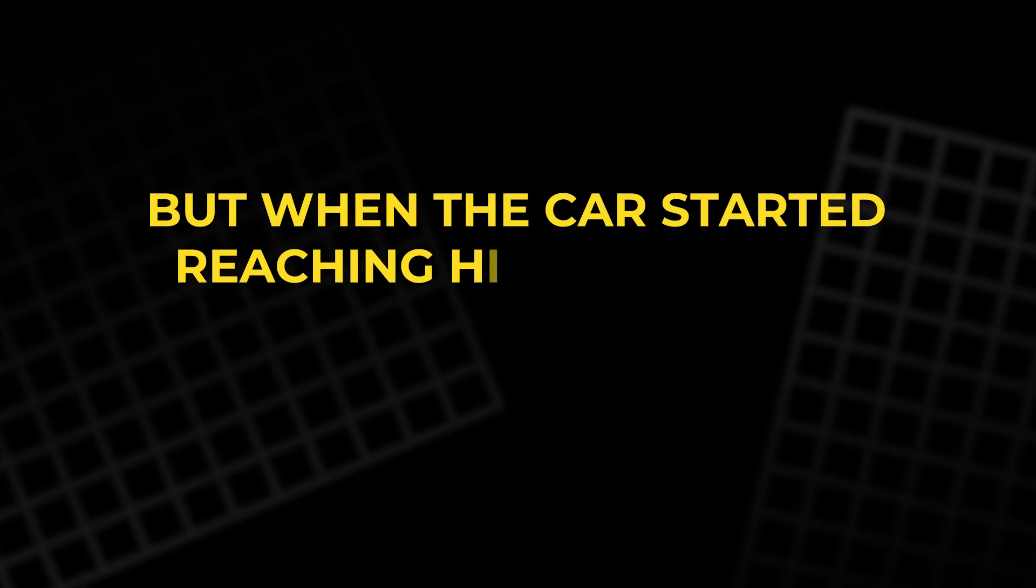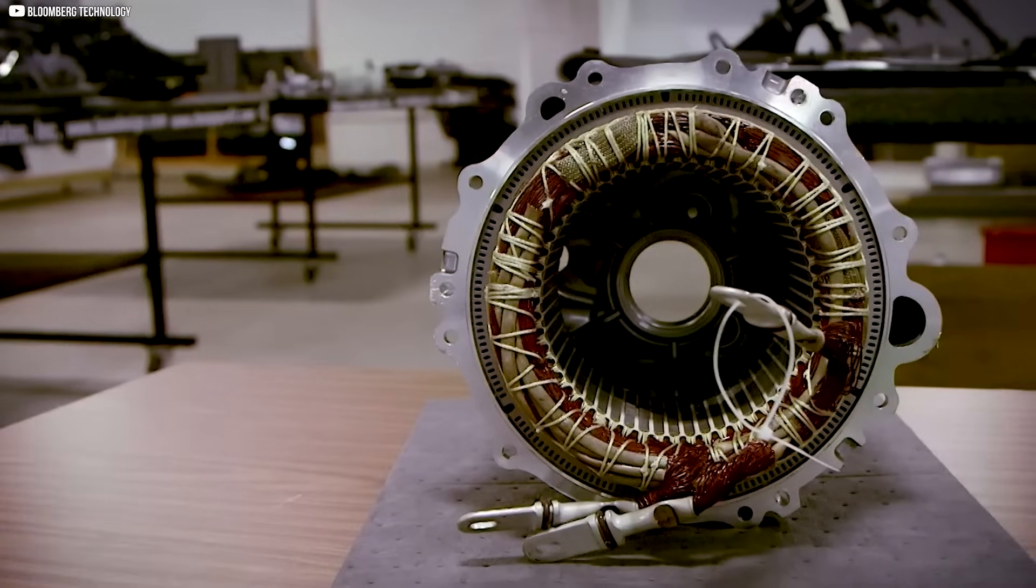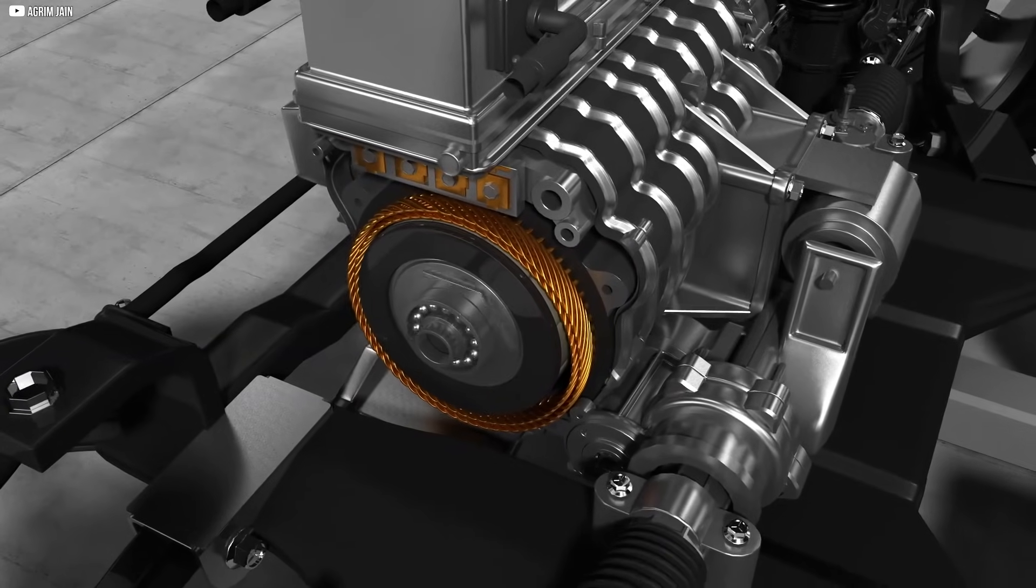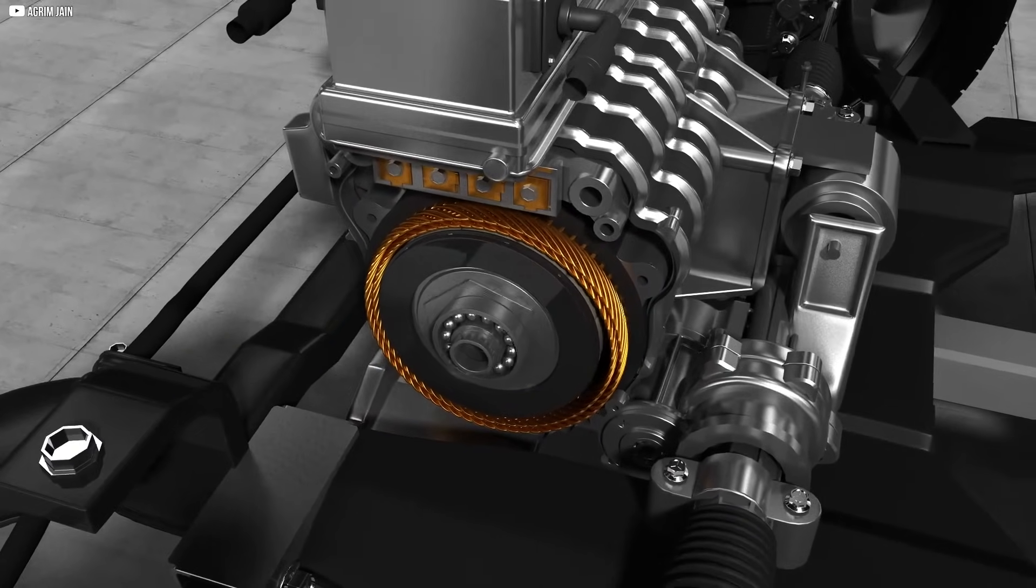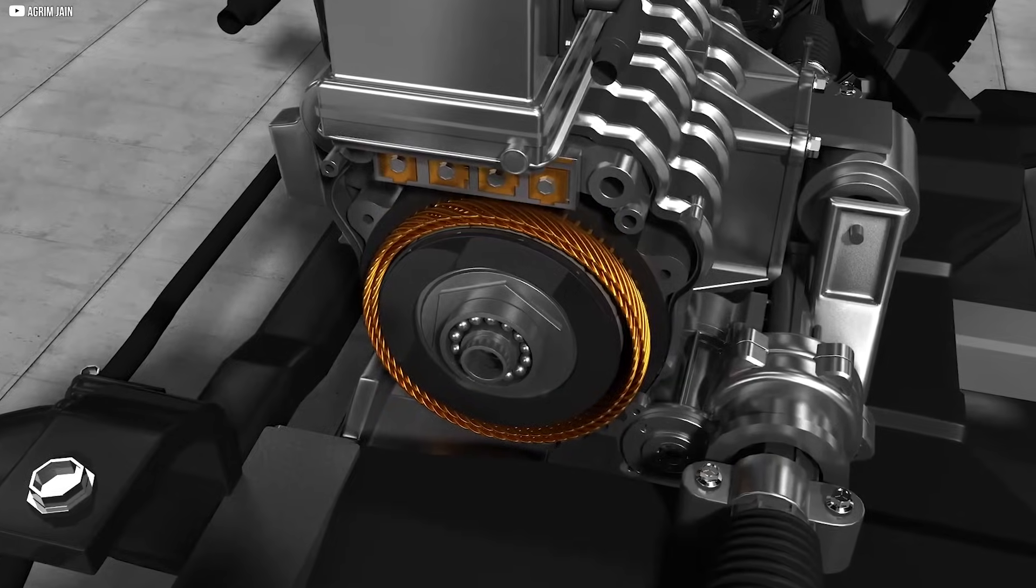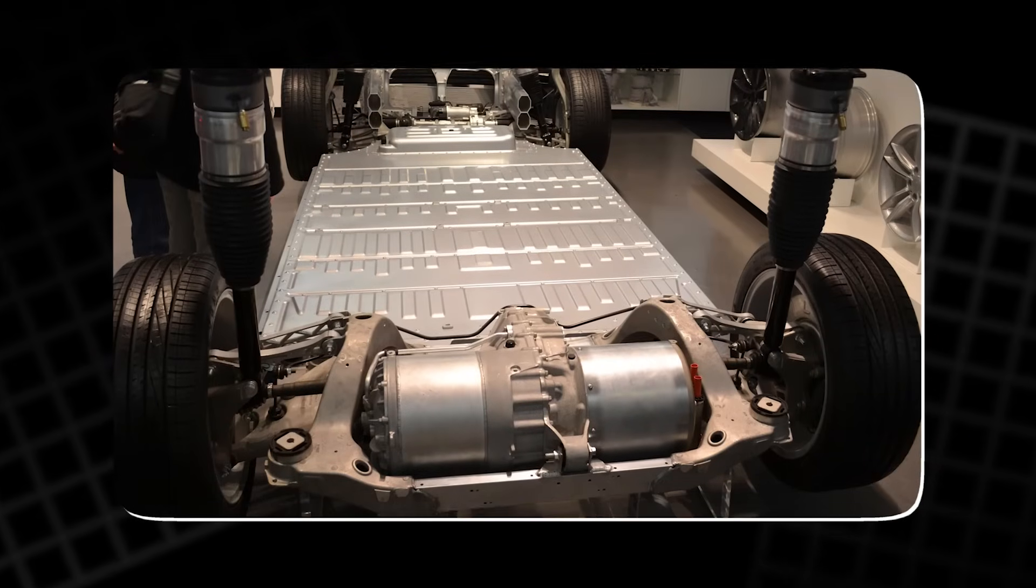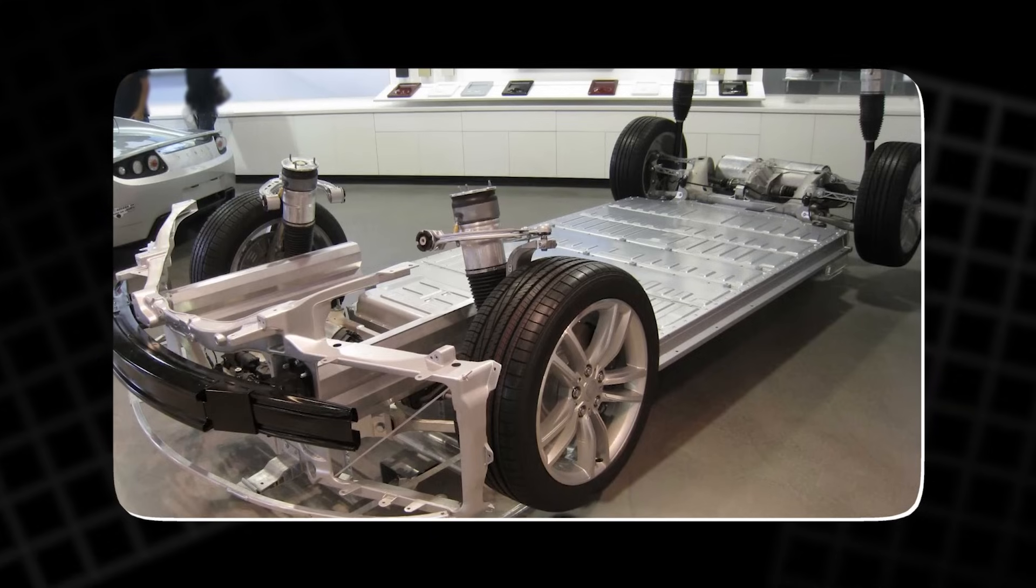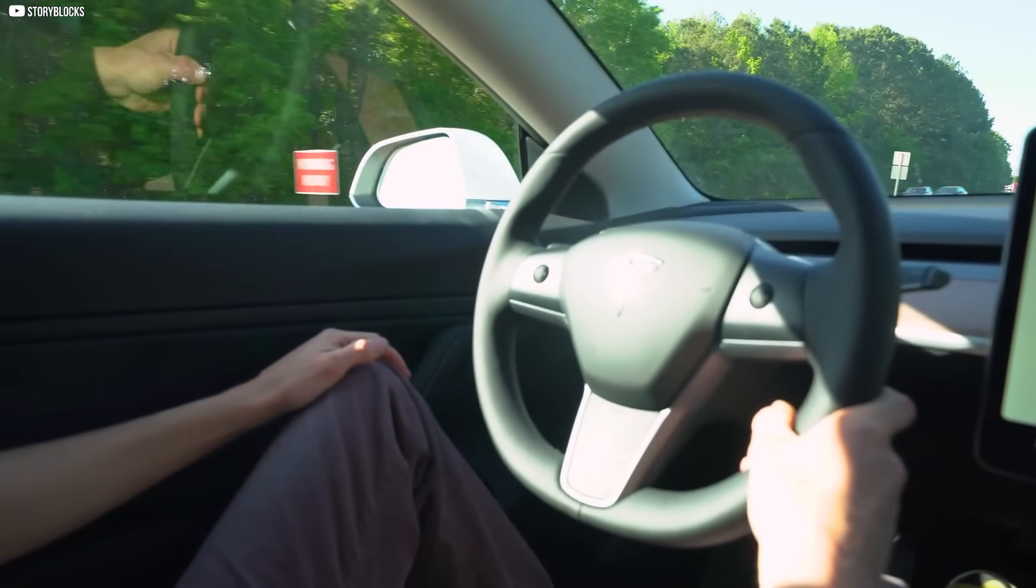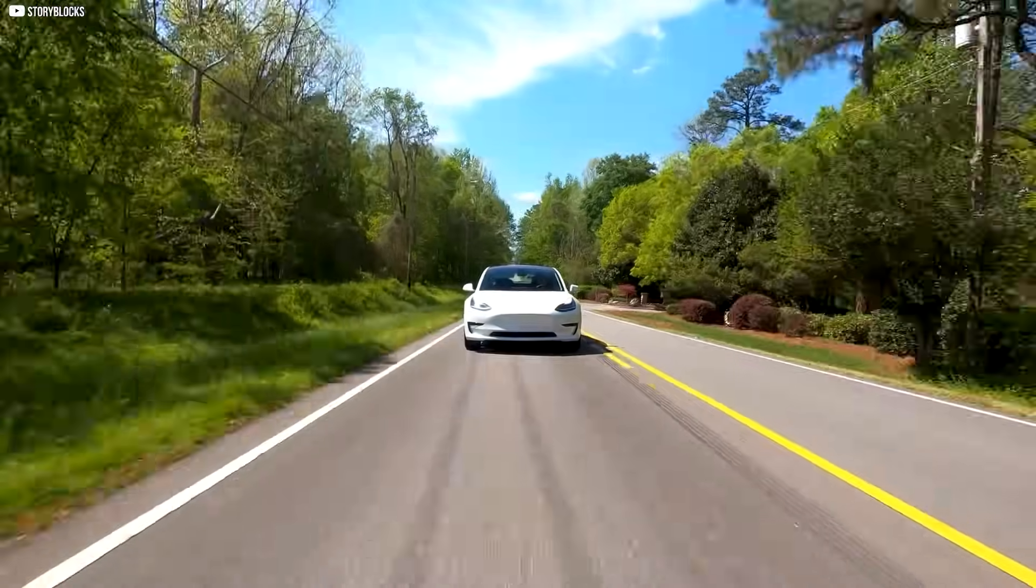But when the car started reaching higher speeds, something interesting happened. The permanent magnets began generating more and more back EMF. To avoid efficiency losses, Tesla shifted the RMF angle to a position where the motor's magnetic field actively weakened the effect of the rotor magnets. This strategy, called field weakening, allowed the motor to keep spinning faster without overwhelming the stator with unwanted voltage. It also lets the reluctance torque take the lead role in keeping the car moving efficiently at highway speeds.